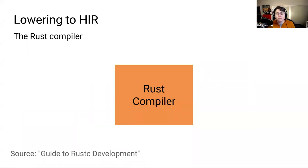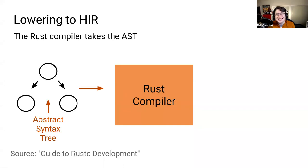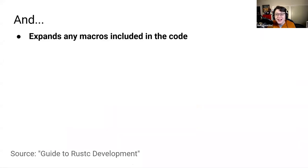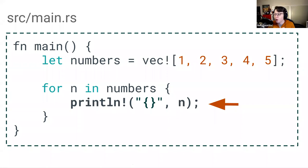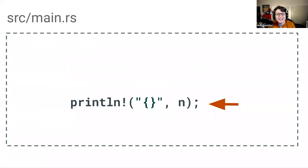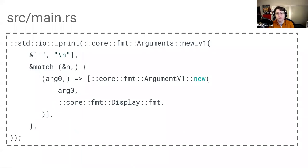At this stage, before it moves on to the next stage of compilation, the Rust compiler takes that abstract syntax tree generated by the parser and first expands any macros included in the code. Looking back at our Rust code, let's take a closer look at the print line statement. Print line in Rust is a macro. When this macro is expanded, it looks like this — this is what the full print line macro looks like and how it will be represented in the abstract syntax tree.